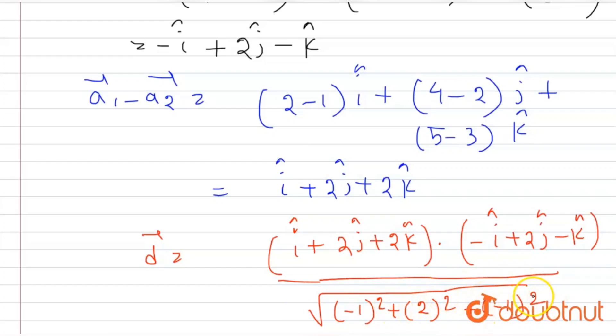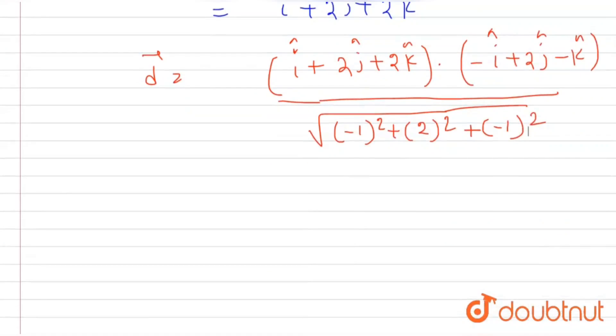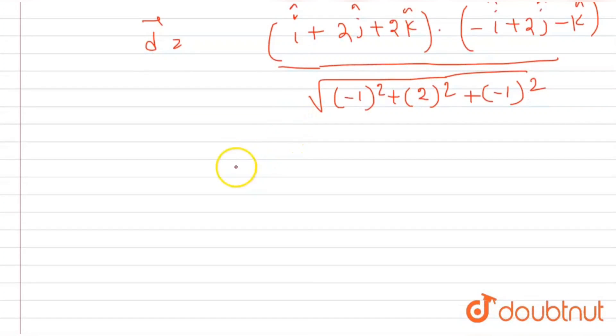Now if we dot product them, we will get minus 1 plus 4 minus 2 by root 6, which equals to 1 by root 6 units.